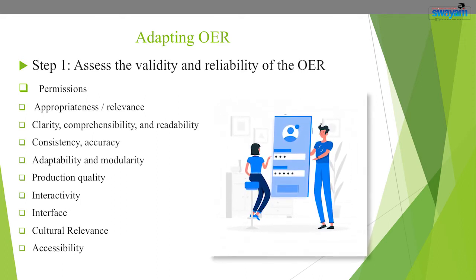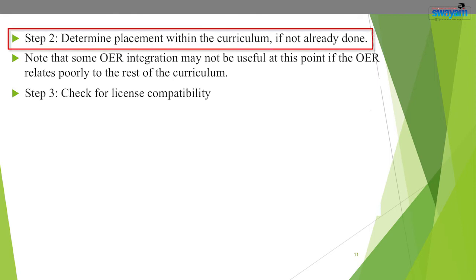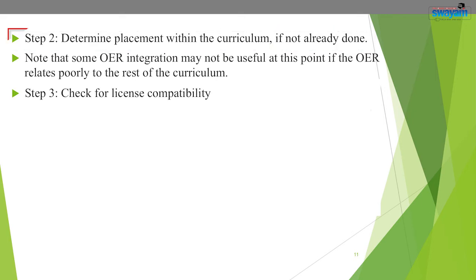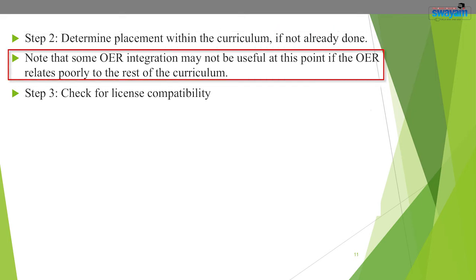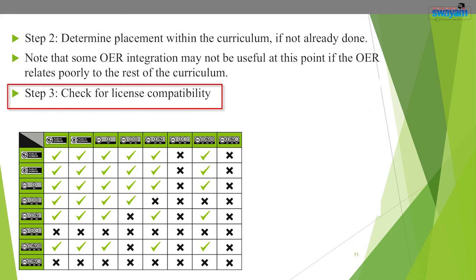Step two: determine the placement of the content within the curriculum if you have not done so already. Note that some OER integration may not be useful if the OER relates poorly to the rest of the curriculum. The next step is to check license compatibility.